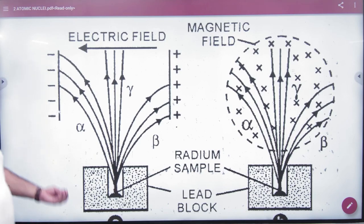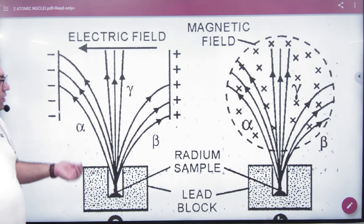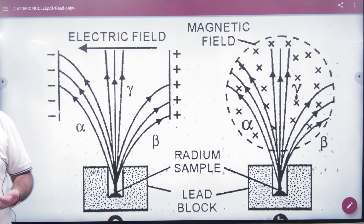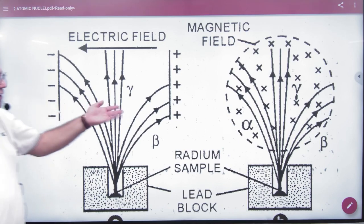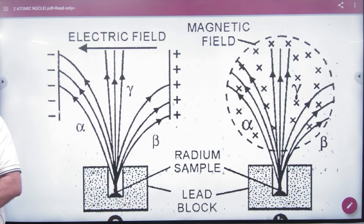Alpha particles are positively charged, so they are deflected by electric fields. Beta particles are negatively charged, so they also experience force in an electric field. Gamma particles are neutral, so they go straight through an electric field and are not deflected.